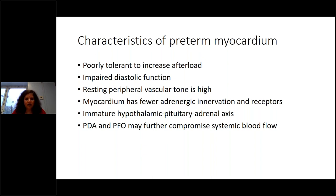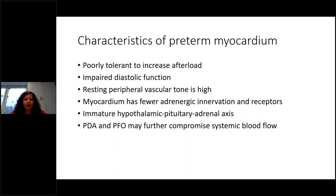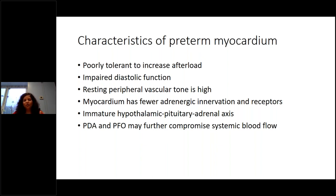Babies have a resting very high peripheral vascular tone, which increases afterload on the myocardium. The myocardium also has few adrenergic innervations — fewer receptors — so normal medications used for treating hypotension are more refractory in a preterm myocardium. There is also an immature hypothalamic-pituitary-adrenal axis, which forms the basis of one management aspect of preterm hypotension. And obviously you have the ductus arteriosus and patent foramen ovale through which significant shunting can compromise blood flow.